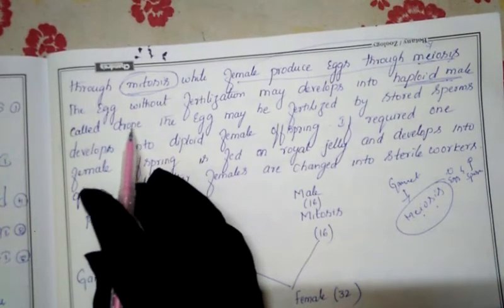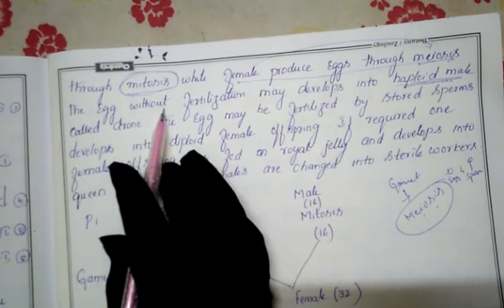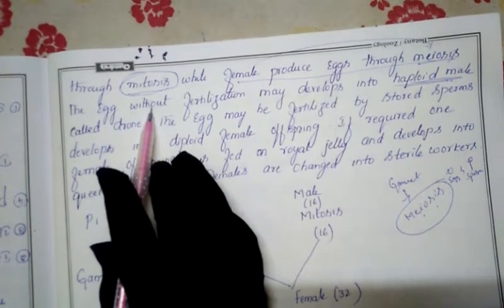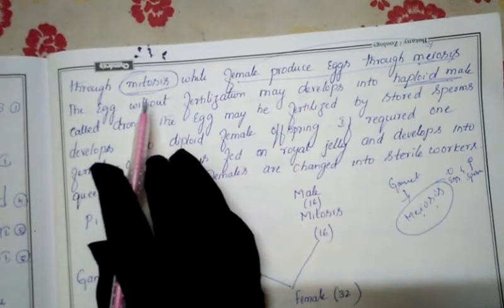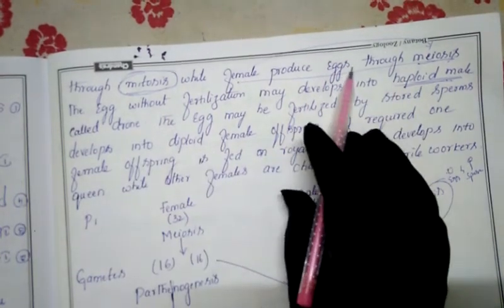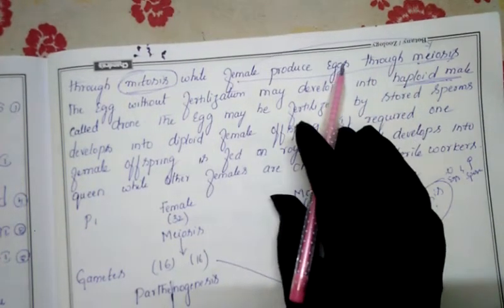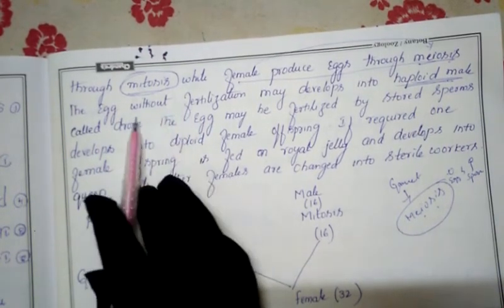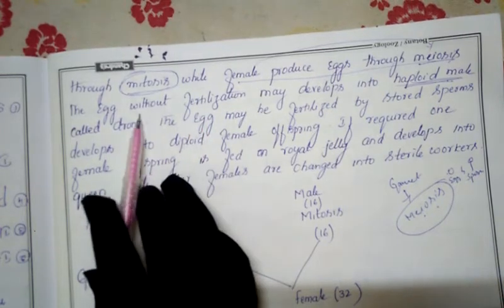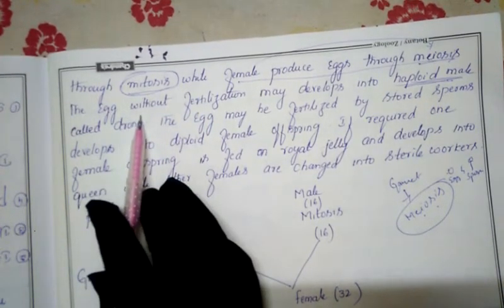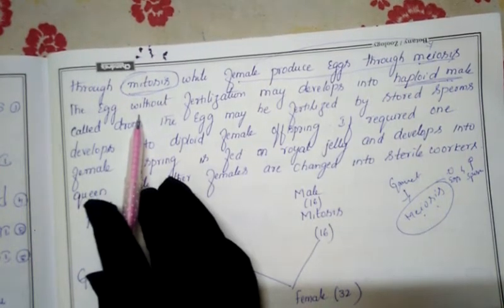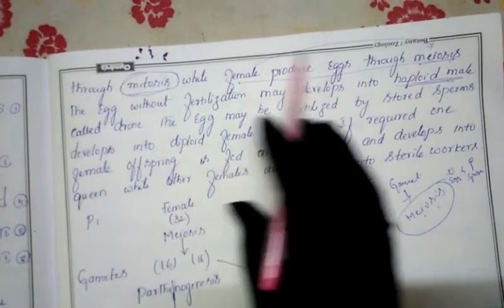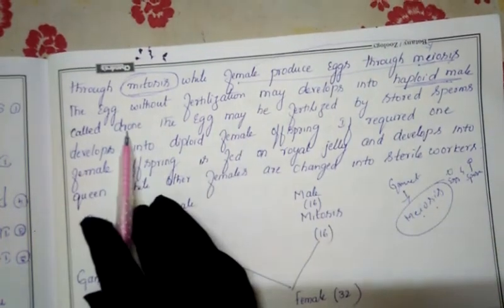Through parthenogenesis, unfertilized eggs develop directly into haploid male offspring called drones. Meanwhile, some eggs are fertilized by stored sperms and develop into diploid females. So males (drones) are haploid and produced without fertilization, while females are diploid and produced through fertilization.